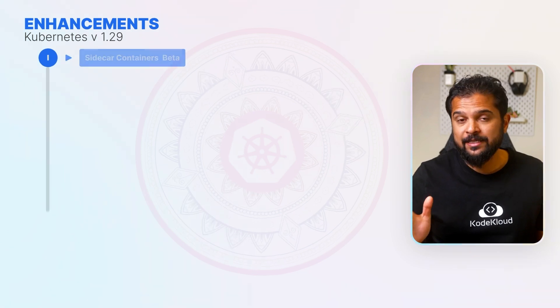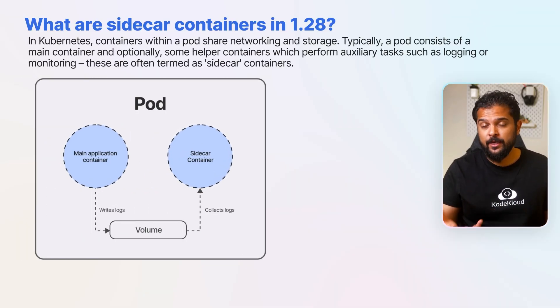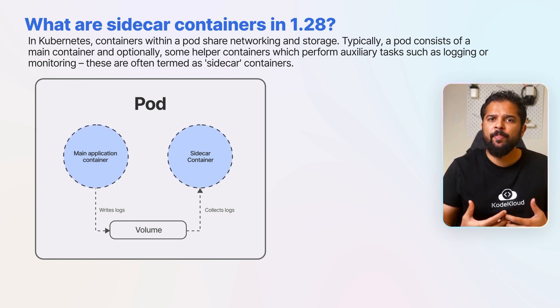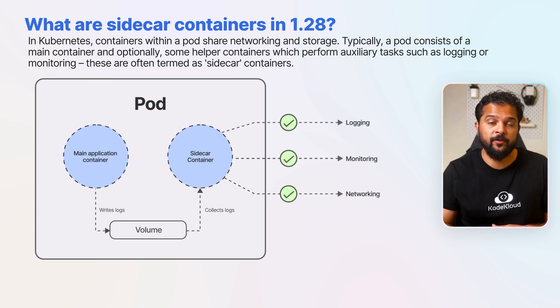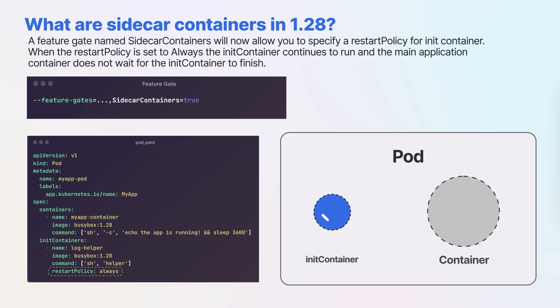The first on our list is sidecar containers. In Kubernetes, containers within a pod share networking and storage. Typically, a pod consists of the main container and optionally some helper containers which perform auxiliary tasks such as logging or monitoring — these are termed sidecar containers. Introduced in Kubernetes 1.28, the sidecar container pattern became a built-in feature, marking a significant step in supporting auxiliary container roles within a pod.